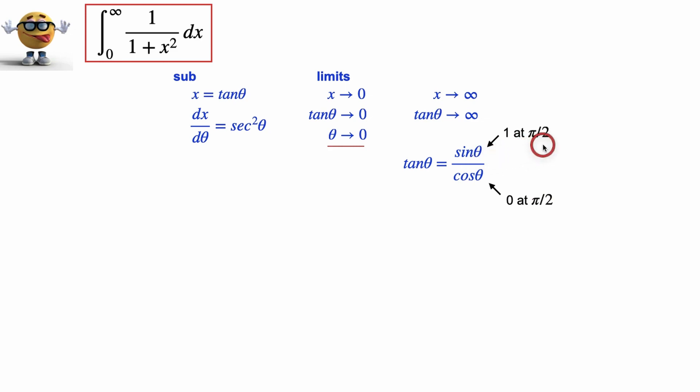So as theta approaches pi over 2, this goes to 1, this goes to 0, so this fraction becomes very, very large. It actually goes to infinity as theta goes to pi over 2. I hope that makes sense. Let me know if this isn't clear.